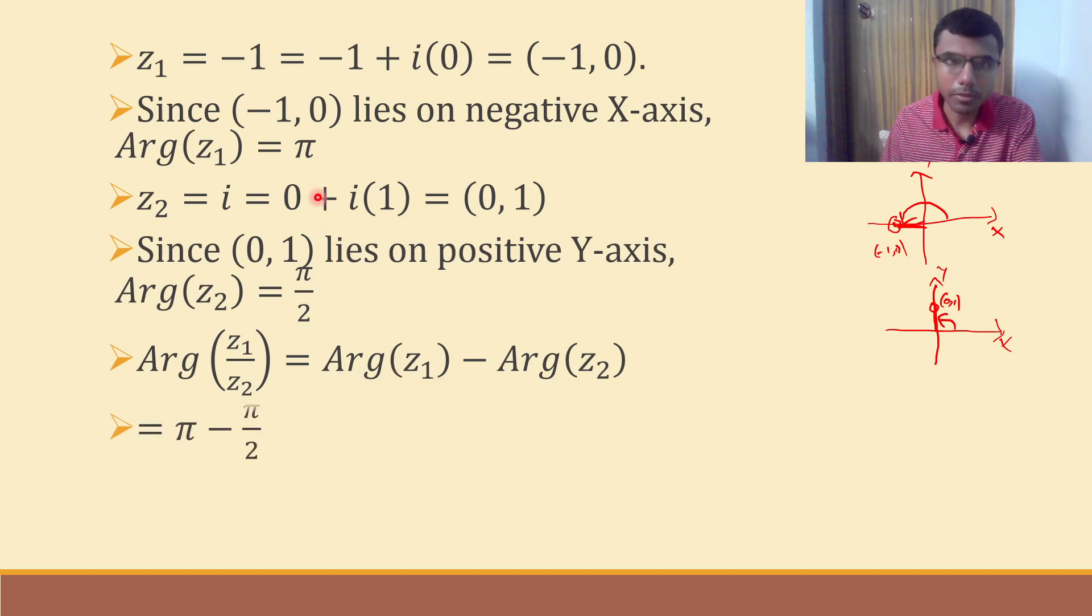So just substitute: argument of z1 is π, argument of z2 is π by 2, is π minus π by 2, answer π by 2. That's it.